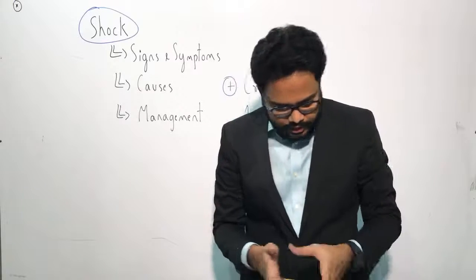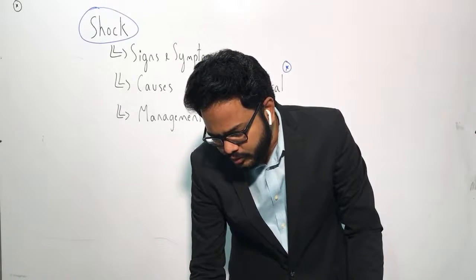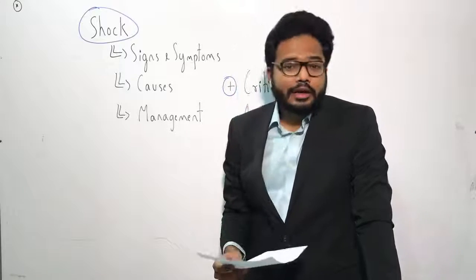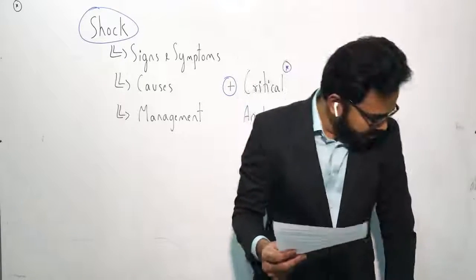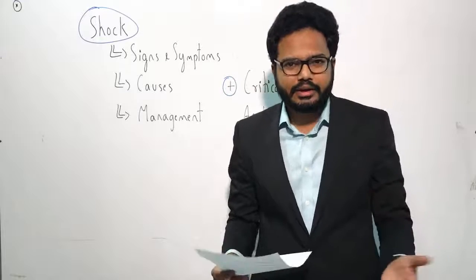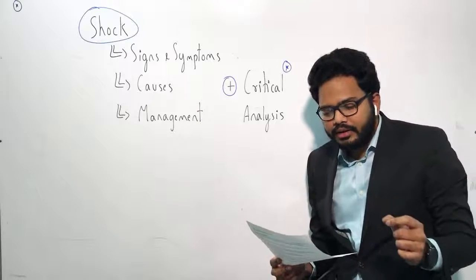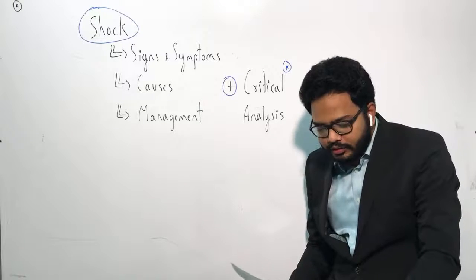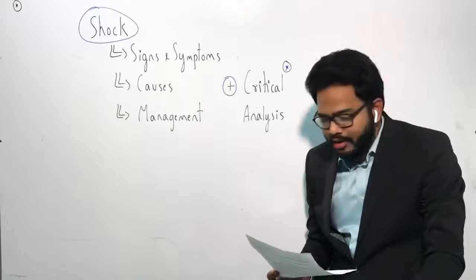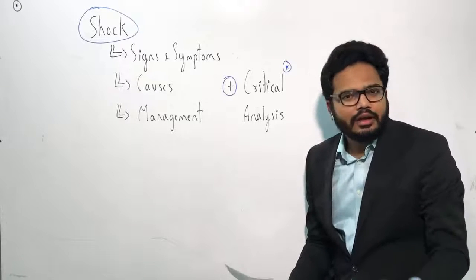Go through the information given over there and simultaneously we'll briefly discuss it and analyze the questions. So — syncope and psychogenic shock. The signs and symptoms include the following: pallor, sweating, nausea, anxiety, pupillary dilation, yawning, decreased blood pressure, bradycardia or slow pulse, convulsive movements, and unconsciousness.